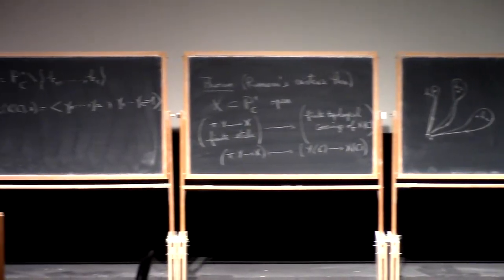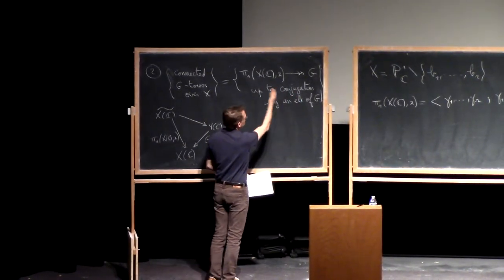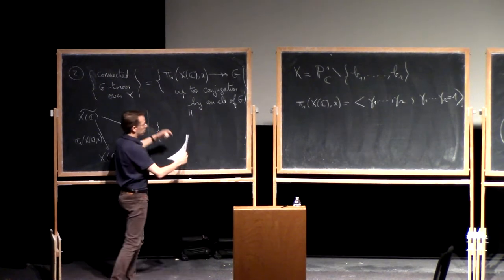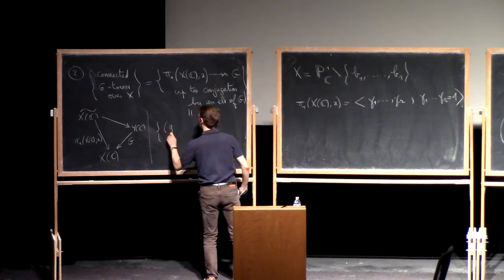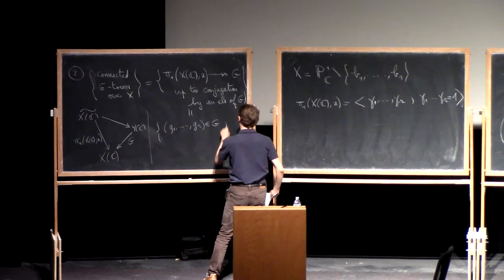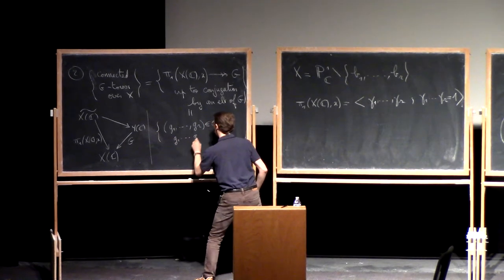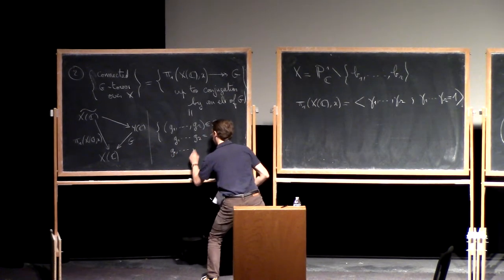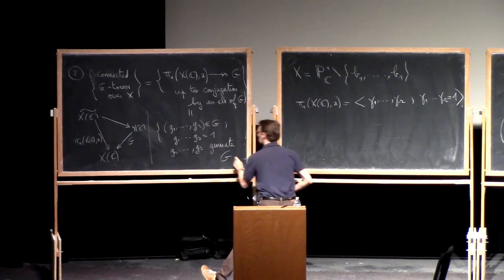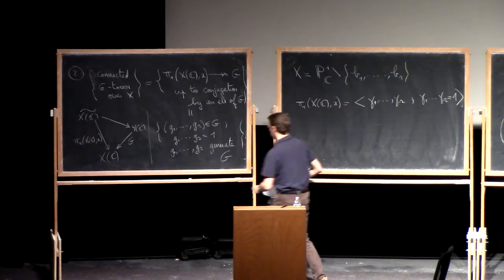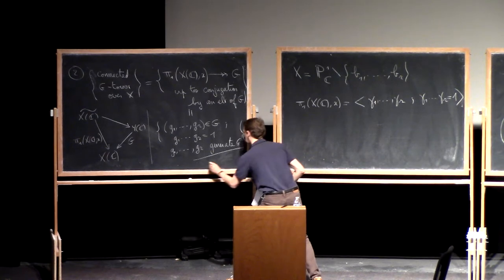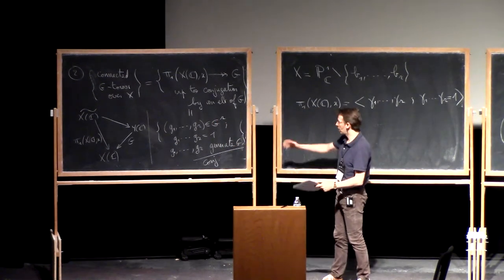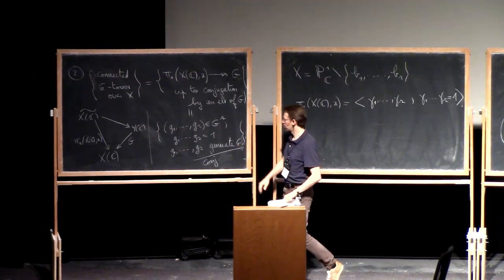Now let's plug this in. A morphism like this is the same as giving the images of the γᵢ's. That is the same as giving a tuple of elements g₁, ..., gᵣ in G such that the product is 1 and such that the gᵢ's generate the group — because I want this to be surjective. This is in Gʳ, and G acts by simultaneous conjugation on all of the components, up to conjugation.